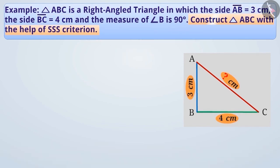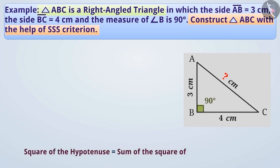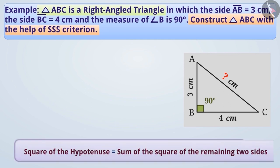Therefore, in order to construct triangle ABC, first we have to find the length of the side CA. In the question, we are given that triangle ABC is a right-angled triangle. A right-angled triangle is a triangle in which one angle is a right angle, that is, 90 degrees. We know that in a right-angled triangle, the square of the hypotenuse is equal to the sum of the squares of the remaining two sides.